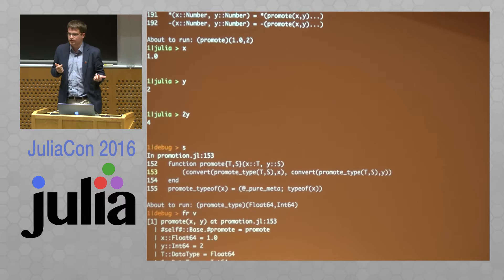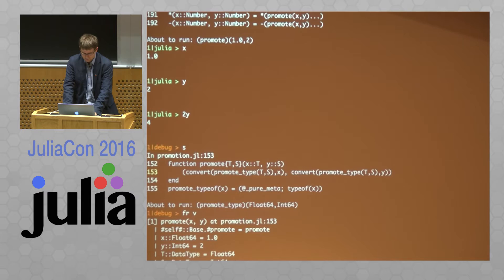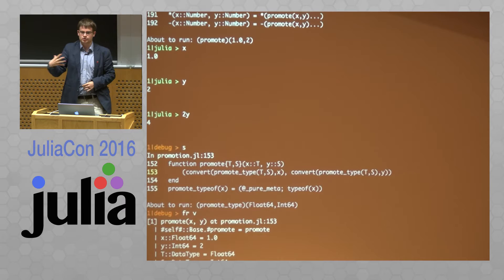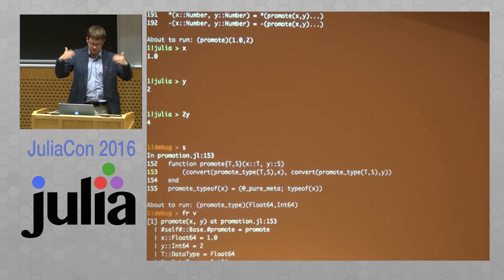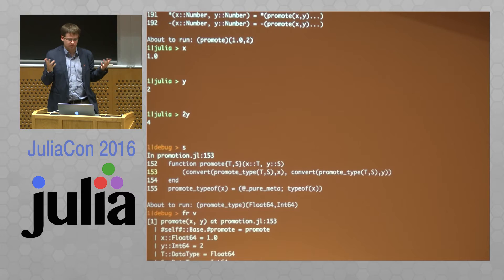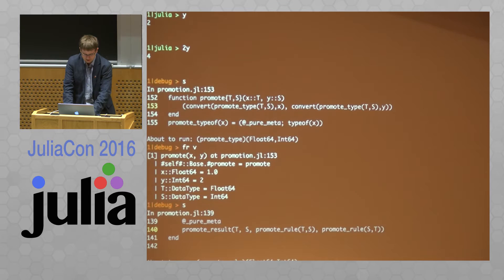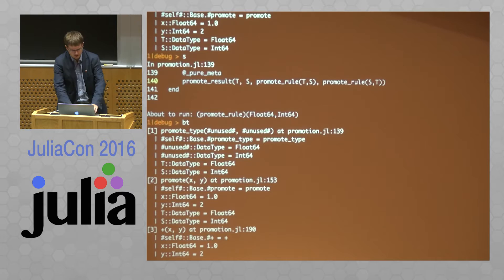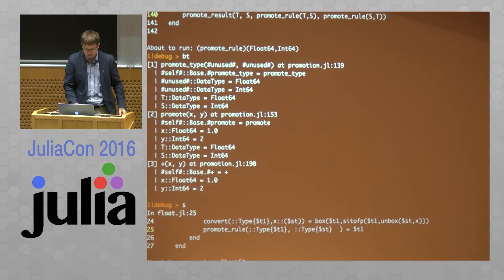We can look at `x` and `y` — they're still there — and the two type parameters of the promote function, `T` and `S`, are also available. You can see what it's about to run next, which helps you decide how you want to step. With a line-based visualization it's sometimes not clear where it's going next. If we get lost about where we are, we can get a backtrace of all the frames with all the variables to see exactly where we are.